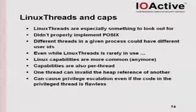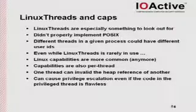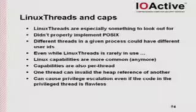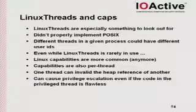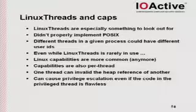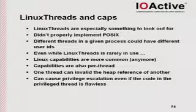Although Linux threads isn't really used anymore — it's been replaced by NPTL — so you're not going to find it in a whole lot of places, but it's still something to keep an eye out for when doing pen tests. Linux capabilities are more common; you do see them in daemons here and there, and they're specifically per thread. So you can actually have another instance where one thread can interfere with another thread and cause it to gain capabilities or privileges even though the other thread was doing everything right.